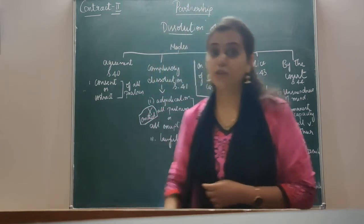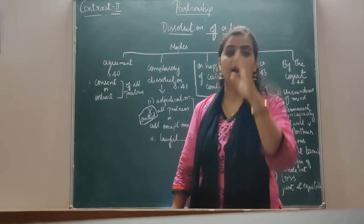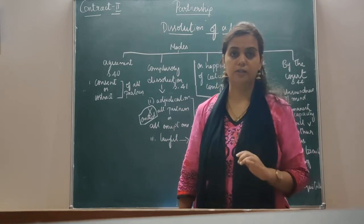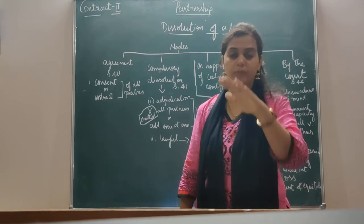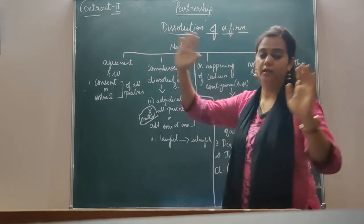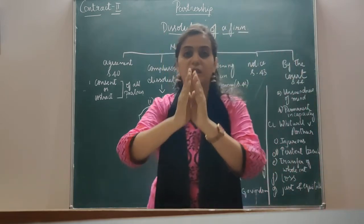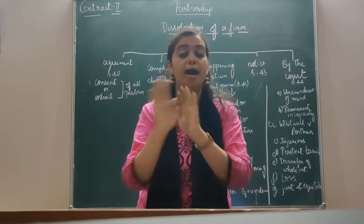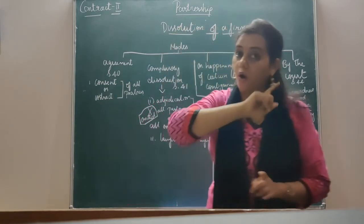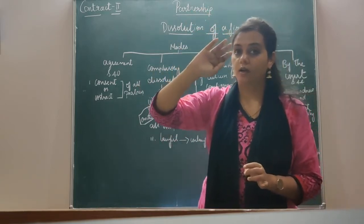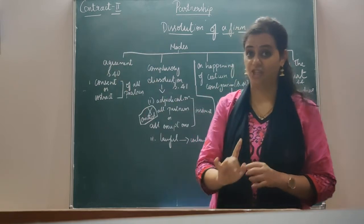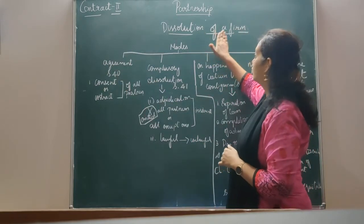Here we are talking about dissolution of the firm. Again with 3 partners A, B and C — if they do not want to continue this partnership firm and want to bring an end to it, that is called dissolution of the firm. The rights and liabilities towards each other cease. They are no more continuing as partners. All partners cease to be partners of the firm and they do not have rights and liabilities towards each other.